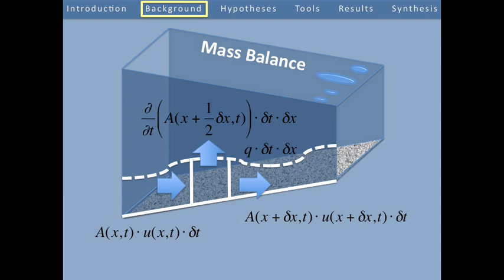Starting in the lower left-hand corner, the expression you see there is the area of the volume element multiplied by the velocity of the water at that position multiplied by the time over which the velocity is measured — that represents the volume going in. To the right of that, you see the area evaluated down glacier multiplied by the velocity evaluated down glacier multiplied by the time over which that velocity is measured — that represents the volume going out of the element. Both of those measurements are taken at the same time. During the time we measured the velocity going into and out of the subglacial volume element, the cross-sectional area of that element may have been changing. Between the down glacier and up glacier grid points, we measure the time rate of change of the cross-sectional area, multiplied by the time over which that area was measured multiplied by the down glacier distance.